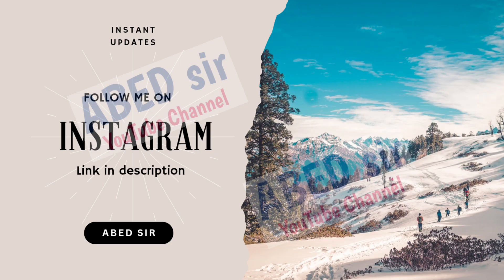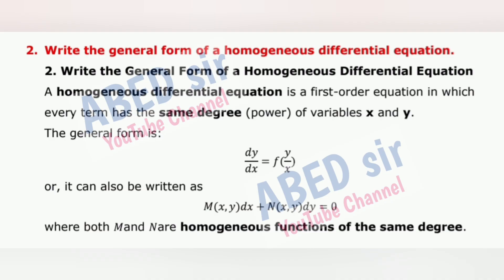Next important short question: Write the general form of a homogeneous differential equation. A homogeneous differential equation is a first-order equation in which every term has the same degree (power) of variables x and y. The general form is dy/dx = f(y/x), or it can also be written as M(x,y)dx + N(x,y)dy = 0, where both M and N are homogeneous functions of the same degree.